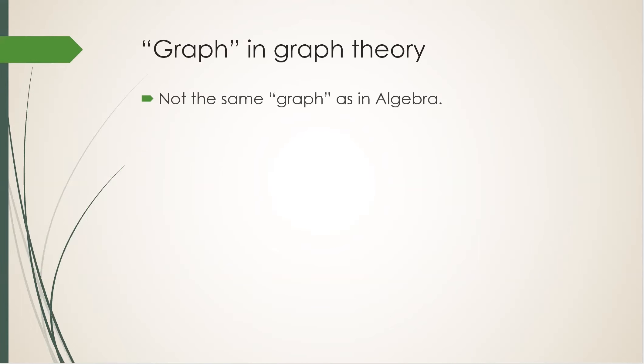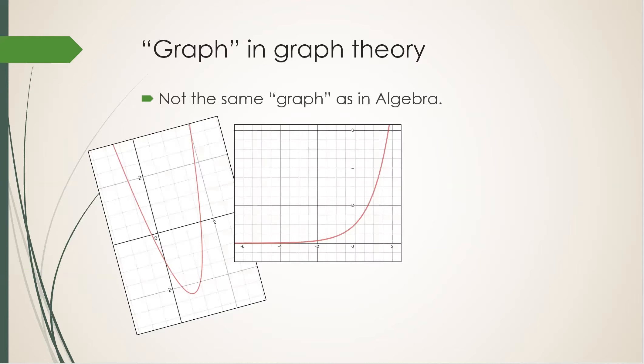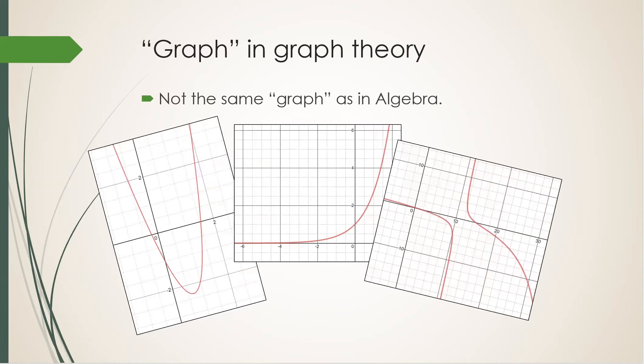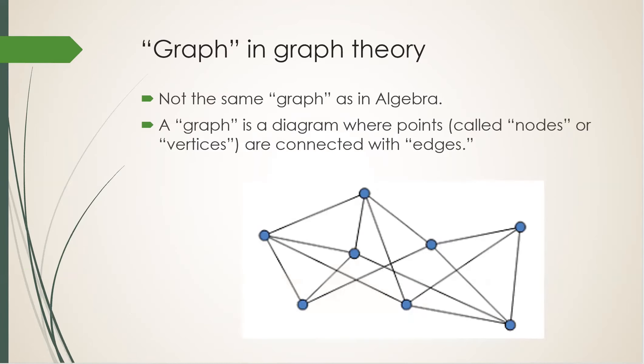The word graph here is not the same thing as in algebra where you draw the graph of a function or of an equation. The word graph in graph theory is more like a network or a diagram of points called nodes or vertices and their connections are represented by lines between them called edges.